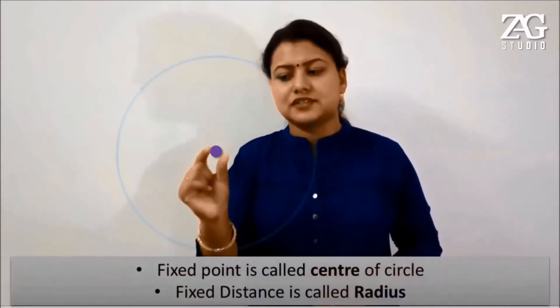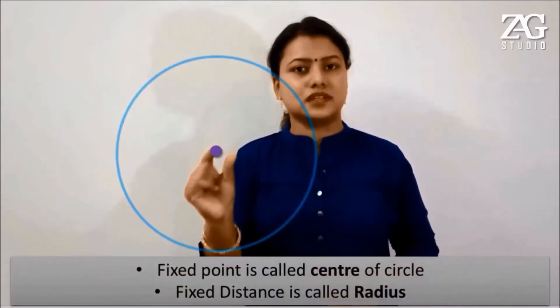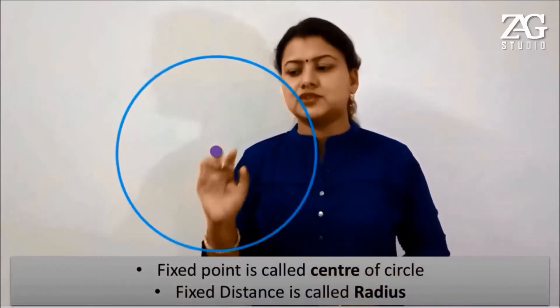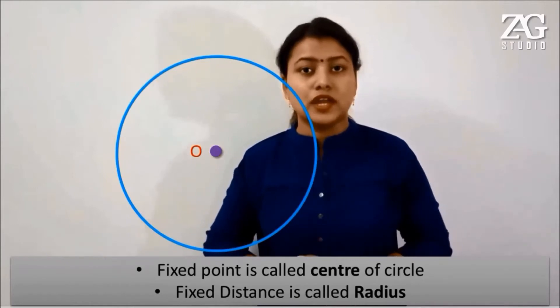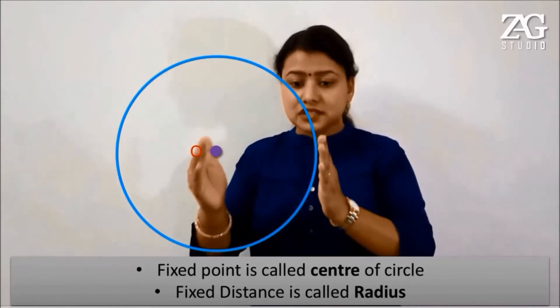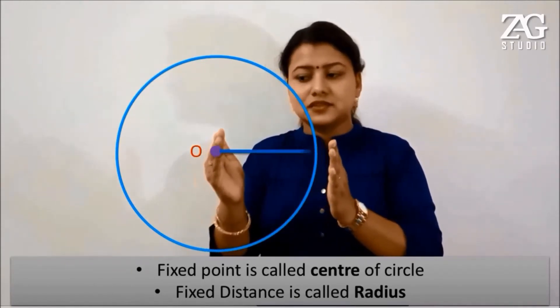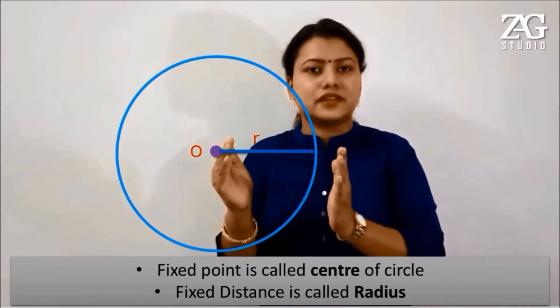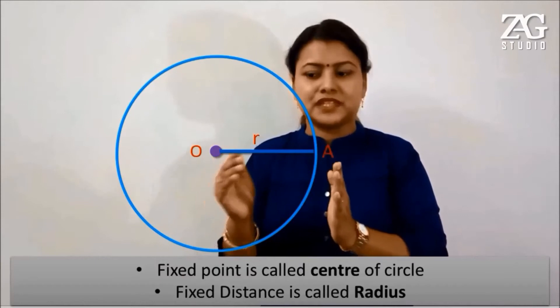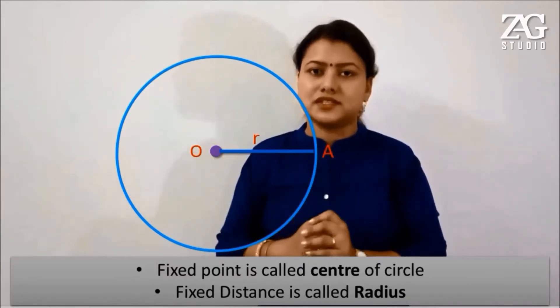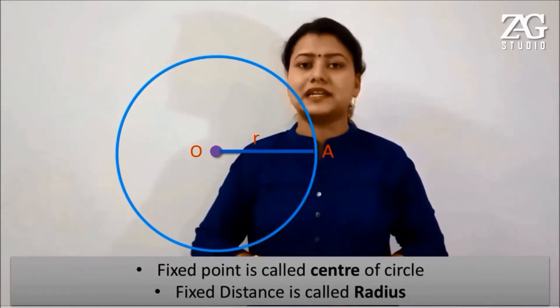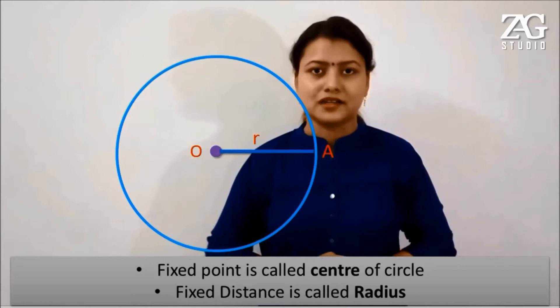Now, what is that fixed point? That fixed point is the center of the circle, which is noted by the letter O. The fixed distance is known as the radius. Here, OA is the radius, which is represented by the letter R.